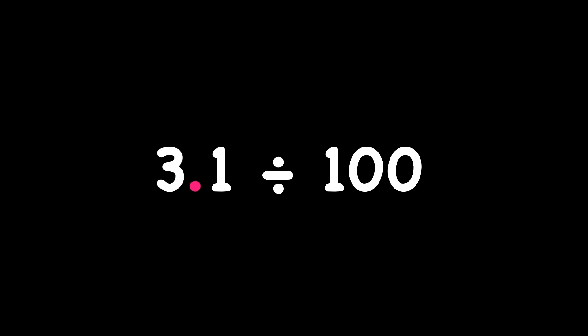Let's try three point one divided by one hundred. Dividing by one hundred means my answer would be a hundred times smaller because I'm dividing. So I'm going to move the decimal point two places to the left. So here's one, two, and then I need to fill in that empty space with a zero. You got it. Three point one divided by one hundred is point zero three one, or thirty-one thousandths.